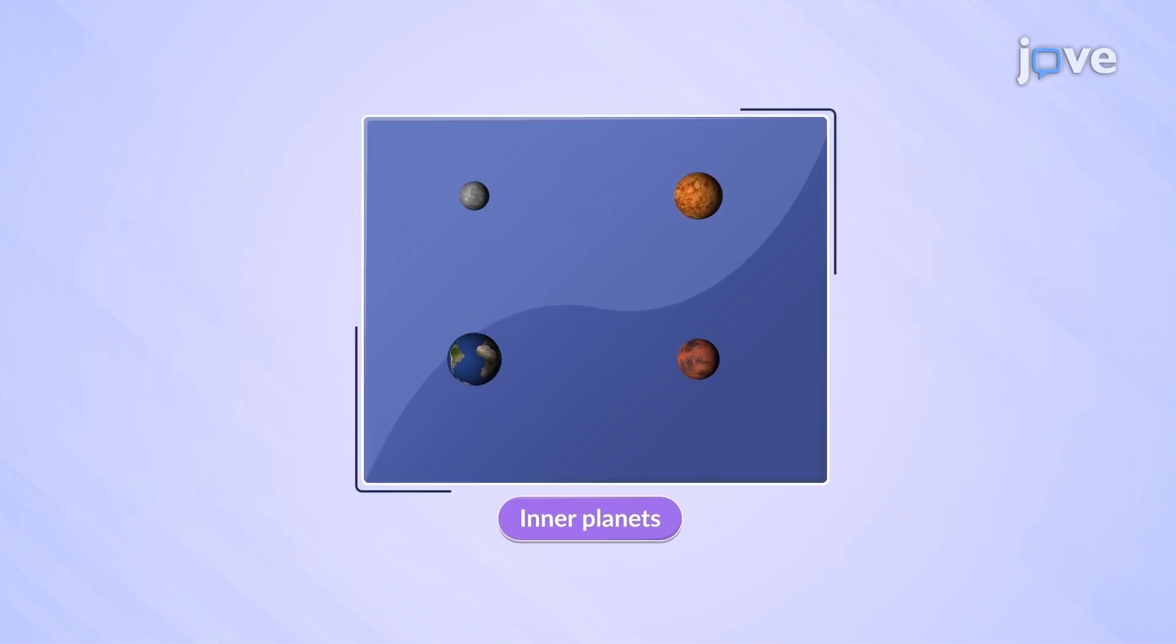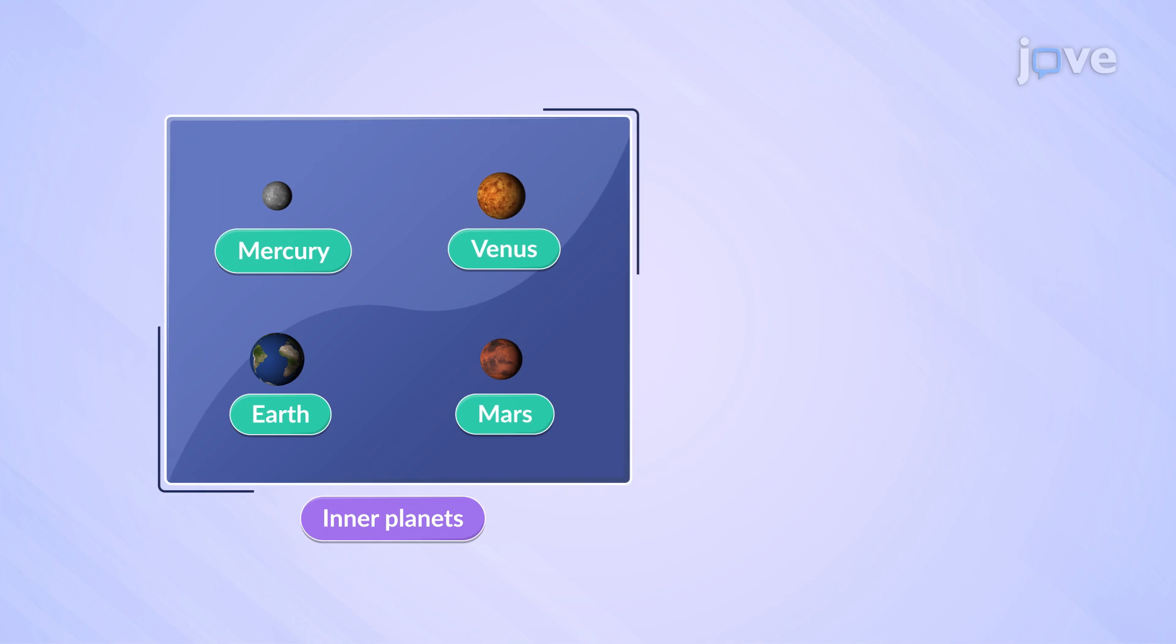Let's begin with the inner planets: Mercury, Venus, Earth, and Mars, which are closest to the sun. They are small, dense, and made of solid rock with iron cores, which is why they are also called terrestrial planets.